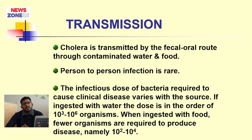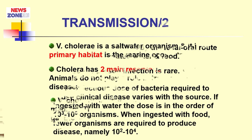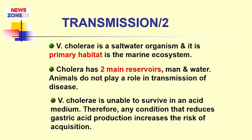Transmission: cholera is transmitted by the feco-oral route, by water and food. Person-to-person infection is rare. Vibrio cholerae is a salt water organism and its primary habitat is the marine ecosystem. Cholera has two main reservoirs: man and water. Animals do not play a role in transmission of this disease. Vibrio cholerae is unable to survive in an acidic medium; therefore, any condition that reduces gastric acid production increases the risk of acquiring the disease.